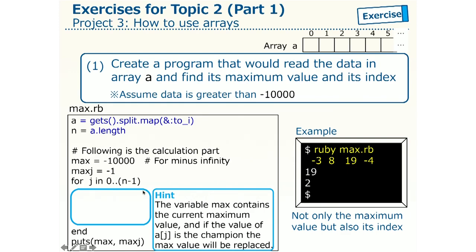Here is a little hint. Consider the j's iteration of this for loop. Let's assume that the variable max keeps the current max value in A0 to AJ minus 1. That is, it is the current champion. Then, we compare the value of AJ and this champion. And if it beats the champion, that is, if AJ is greater than max,